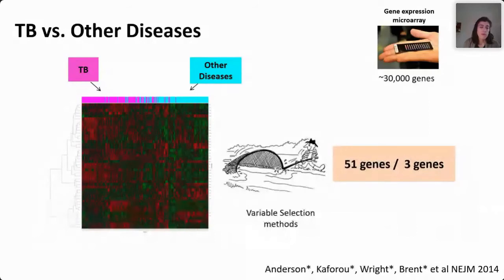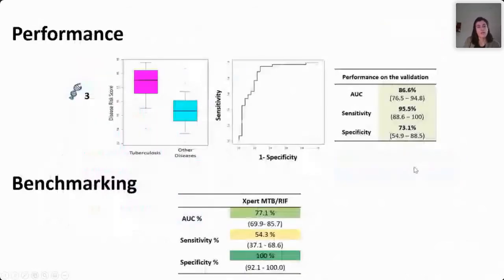From thousands of genes that were differentially expressed, we managed to whittle this down to 51 originally published, and now down to three that can form the basis of a diagnostic test. You can see here how the three genes separate patients with tuberculosis disease from other diseases very nicely, with high sensitivity and slightly less specificity, but overall a very good area under the curve.